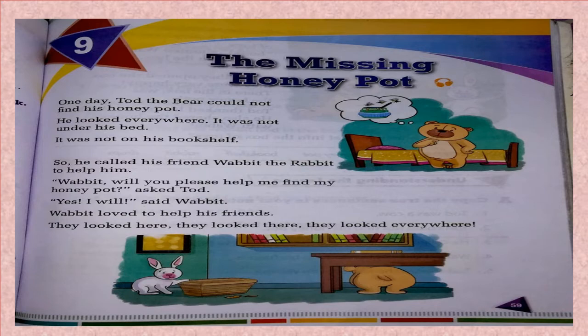I had already sent an animated video where I have explained the chapter. Now once again, let us read Chapter 9: The Missing Honey Pot. One day, Todd the bear could not find his honey pot. He looked everywhere. It was not under his bed. It was not on his bookshelf. So he called his friend Rabbit to help him.